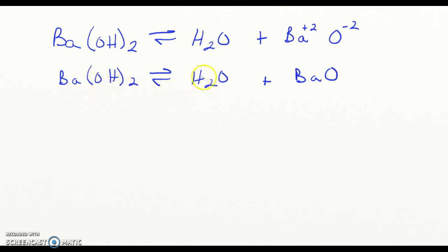Then the last thing we need to do is make sure everything's balanced. There's 2 hydrogens, 2 hydrogens, 2 oxygens. There's 1 oxygen here and 1 oxygen here. And there's 1 barium, 1 barium. We're all set. That is your final answer. Here is the metal anhydride.